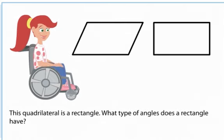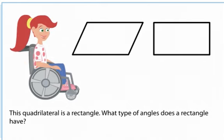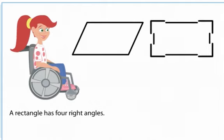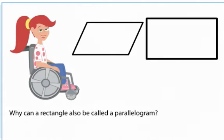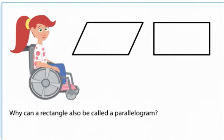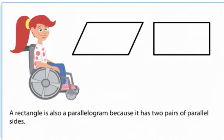This quadrilateral is a rectangle. What type of angles does a rectangle have? A rectangle has four right angles. Why can a rectangle also be called a parallelogram? A rectangle is also a parallelogram because it has two pairs of parallel sides.